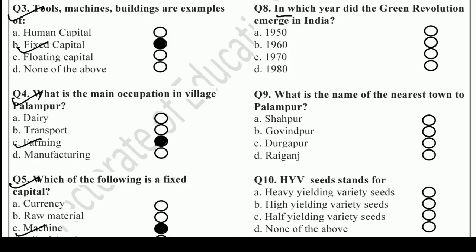Question 8: In which year did the Green Revolution emerge in India? Options are 1950, 1960, 1970, and 1980. The right answer is B — 1960.